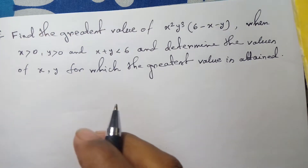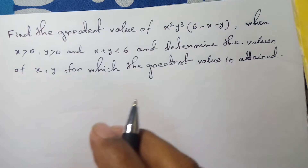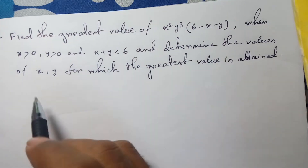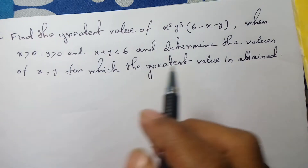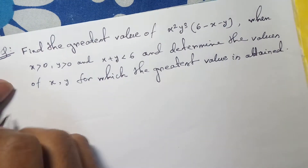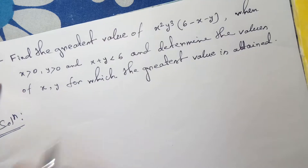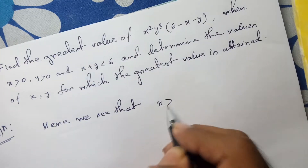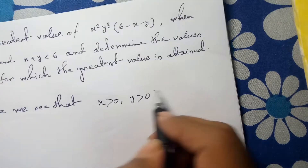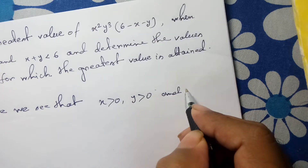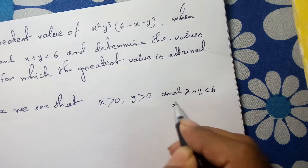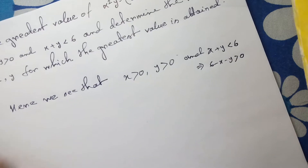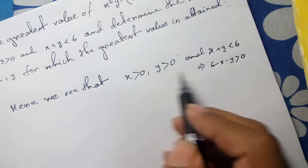Find the greatest value of x squared into y cubed into (6 minus x minus y), when x greater than 0, y greater than 0, and x plus y less than 6. Determine the values of x and y for which the greatest value is attained. In the solution, we see that x > 0, y > 0, and x plus y less than 6, that is, 6 minus x minus y greater than 0. Therefore, x, y, and 6 minus x minus y are all greater than 0.